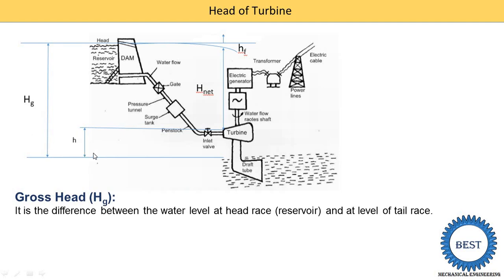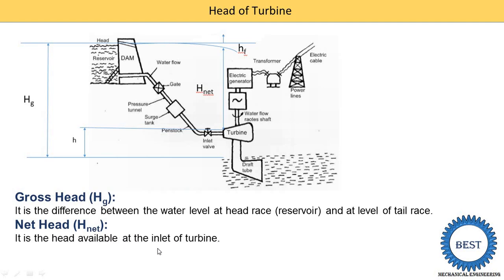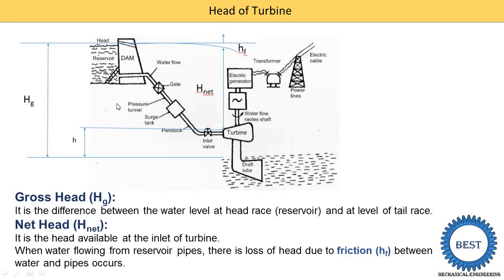Next is the net head, also written as H_net. H_net is the actual head available at the inlet of the turbine, and it is actually useful for producing a certain power. From Hg we subtract the value of Hf and the value of H to get the equation of H_net. From the figure, the total height is Hg. From Hg, subtracting Hf and H gives us H_net.